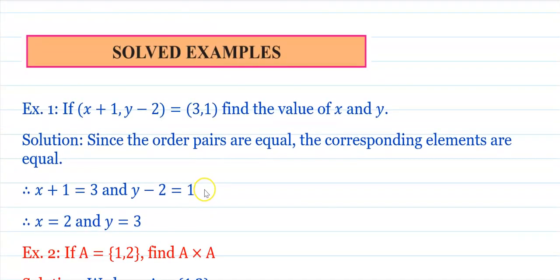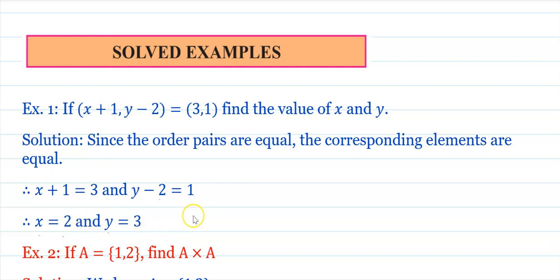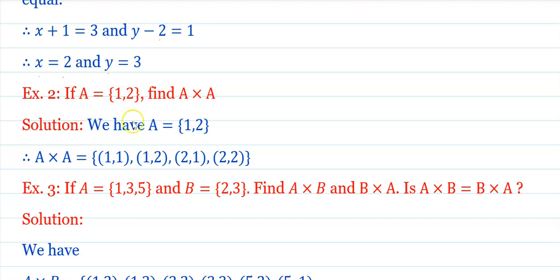Exercise questions. Question 1: If (x+1, y−2) = (3, 1), find x and y. Since the ordered pairs are equal, x+1 = 3 so x = 2, and y−2 = 1 so y = 3. Question 2: If A = {1, 2}, find A × A. A × A = {(1,1),(1,2),(2,1),(2,2)}.